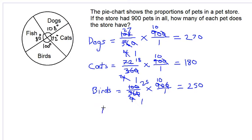Let's look at fish now. 80 degrees, so 80 over 360 times 900 over 1 gives us our answer. The zeros cancel, 9 into 36 is 4, 9 into 90 is 10, 4 into 4 is 1, 4 into 80 is 20. 20 times 10 is 200 fish.